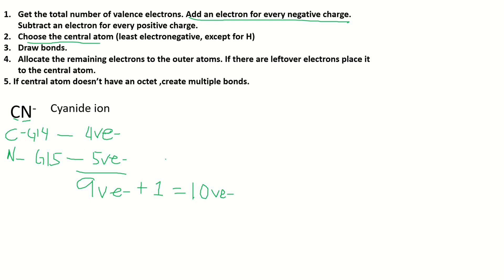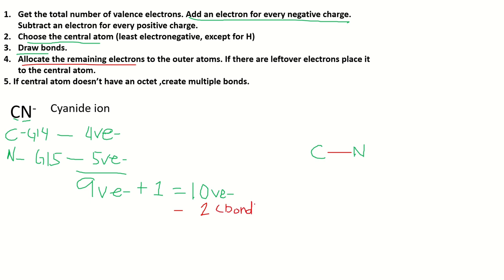Step 2: choose the central atom. We only have two atoms, so no need to choose — we write C for carbon and N for nitrogen. Then we draw bonds: start with a single bond. We already used 2 electrons for the bond, so we subtract 2 from 10. That leaves 8 valence electrons to distribute among the atoms.